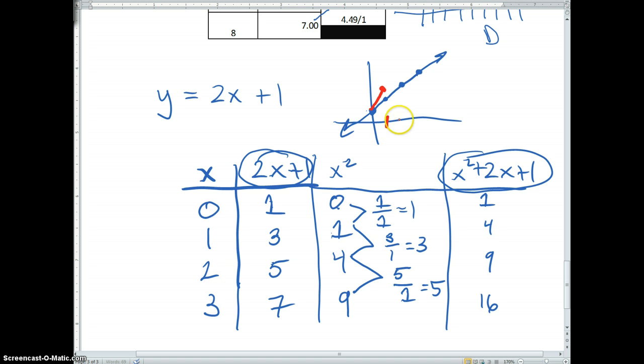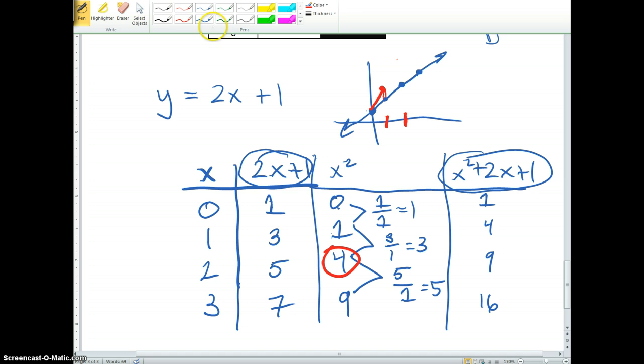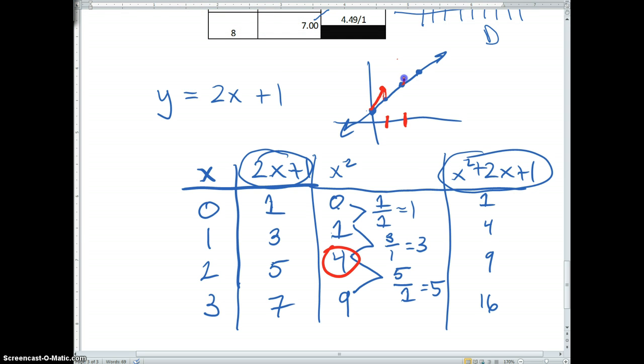When x is 2, the output of 2x plus 1 is 5, but x squared plus 2x plus 1 is 4 units higher. Here was a change of 1, but now it's actually 4 units higher, so that the graph actually appears like it's increasing at a faster rate.